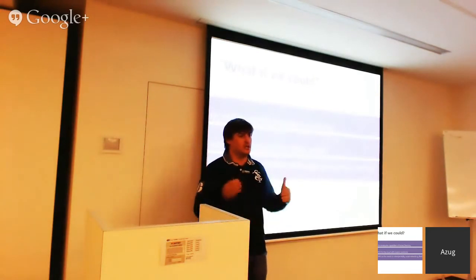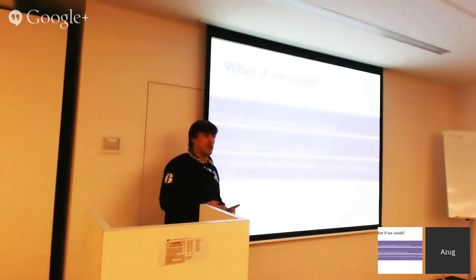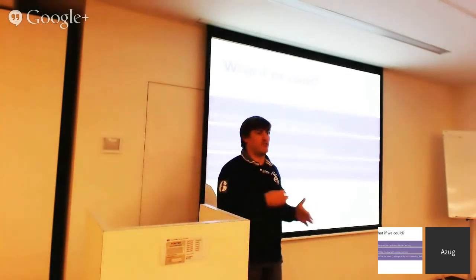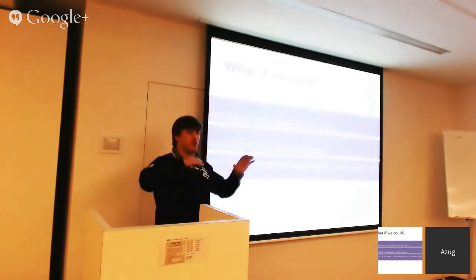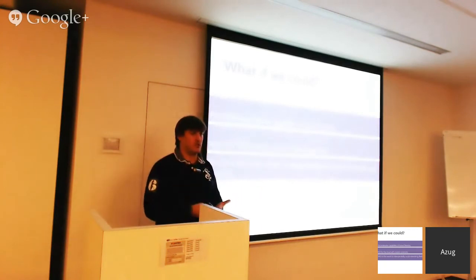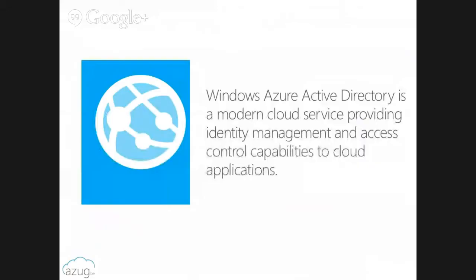We needed something Internet-friendly — what if we could have REST APIs? What if we could have the flexibility we have in social platforms like Facebook, with a graph API to understand who my users are and their relationships? That is what Windows Azure Active Directory is: Active Directory — the directory part — as a service in the cloud with modern Internet protocols.